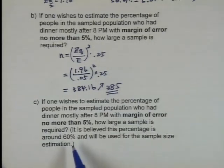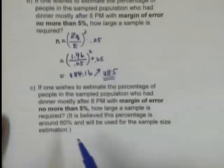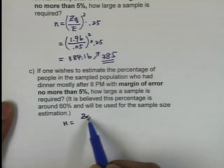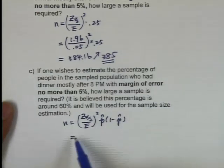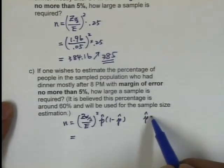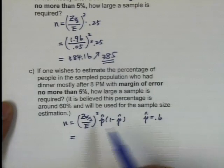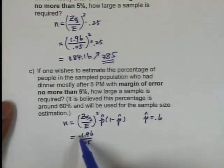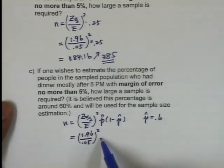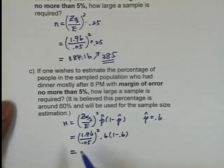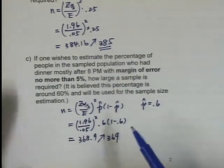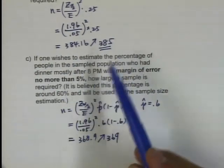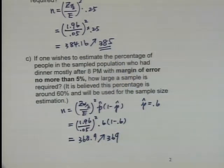Now, if I do have some prior knowledge about proportion like this next problem, then I will just use this second version of the formula. z-score, margin of error, square that, times p-hat, 1 minus p-hat. You know what p-hat is, right? p-hat here is what is given, 60%, prior knowledge. So, 1.96 divided by 0.05, the z-score divided by margin of error, and 0.6, 1 minus 0.6, and you multiply this out. You get 368.9 raised to 369. So, with the prior knowledge, proportion 60%, I actually save a little bit. From 385, I can reduce the sample size to 369. It's almost 20 less.